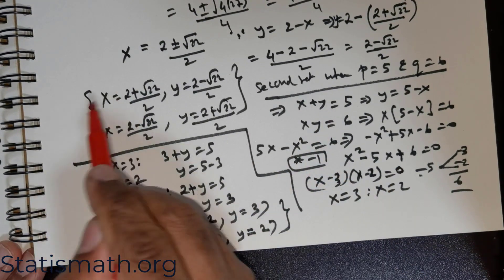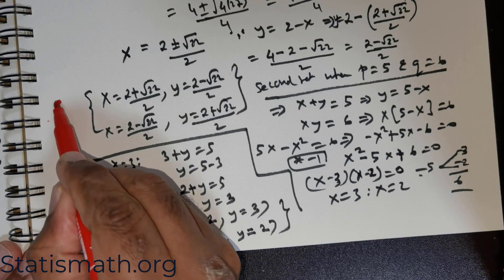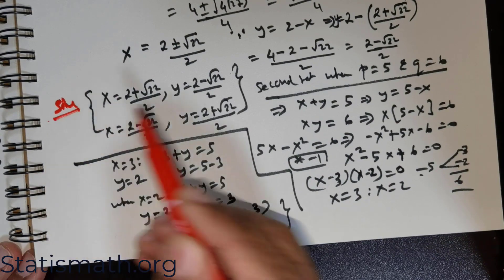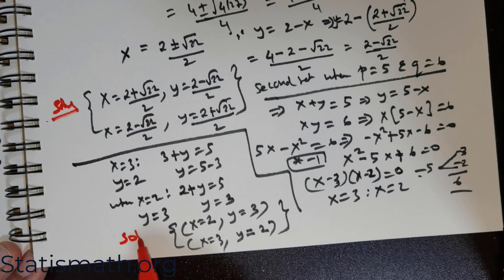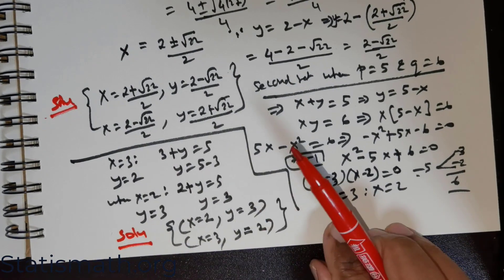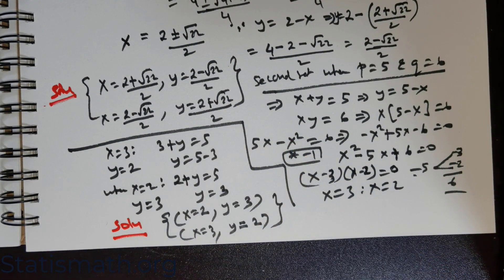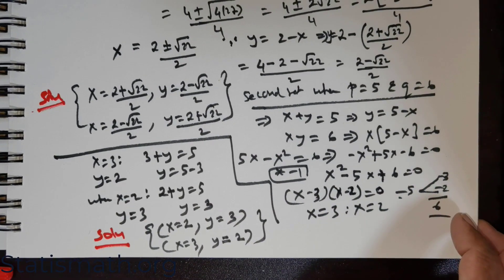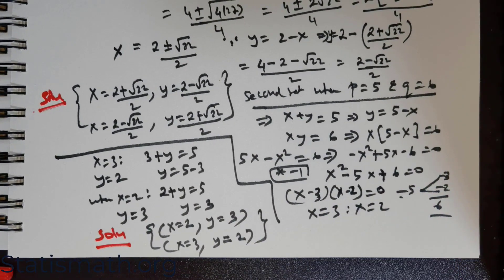So the sets of real solutions are: (x = 2, y = 3) and (x = 3, y = 2) as integer solutions, and (x = (2 ± √22)/2, y = (2 ∓ √22)/2) as irrational solutions. This is a beautiful question that deals with many concepts of algebra and develops the thought process extensively. Thank you.